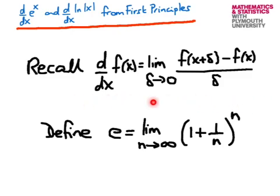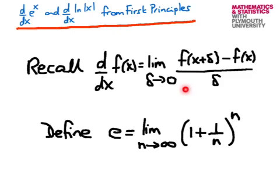Let's recall the definition of a derivative: it's a limiting procedure. You take the function evaluated at x plus delta, subtract from it the function evaluated at x, divide this difference by delta, and take the limit as delta approaches 0 to obtain the derivative.